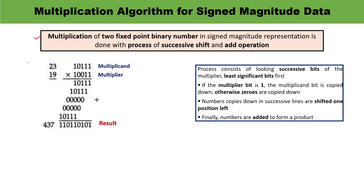You can see here we are going to multiply 23 by 19. So 23 is written in binary and 19 in binary as well. The first number is the multiplicand and the second is the multiplier.